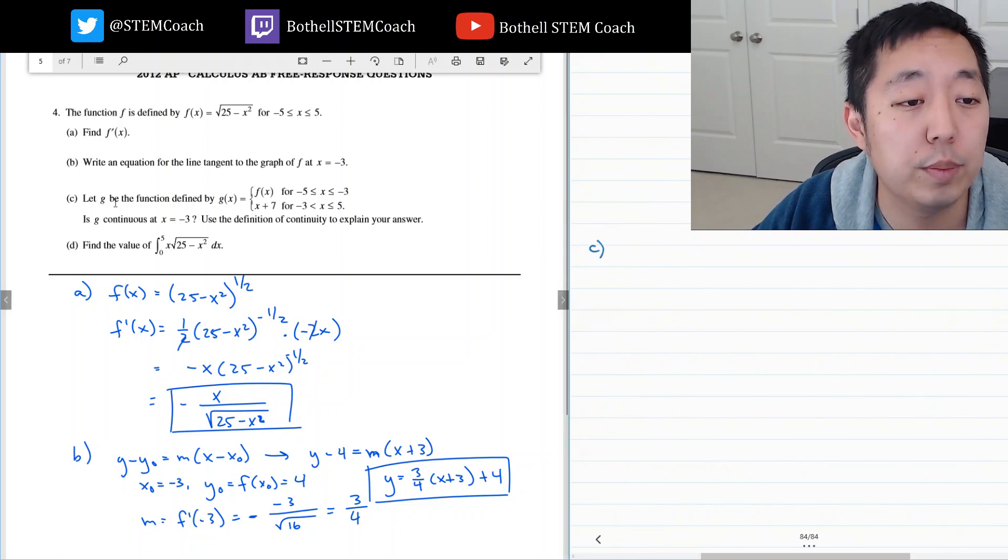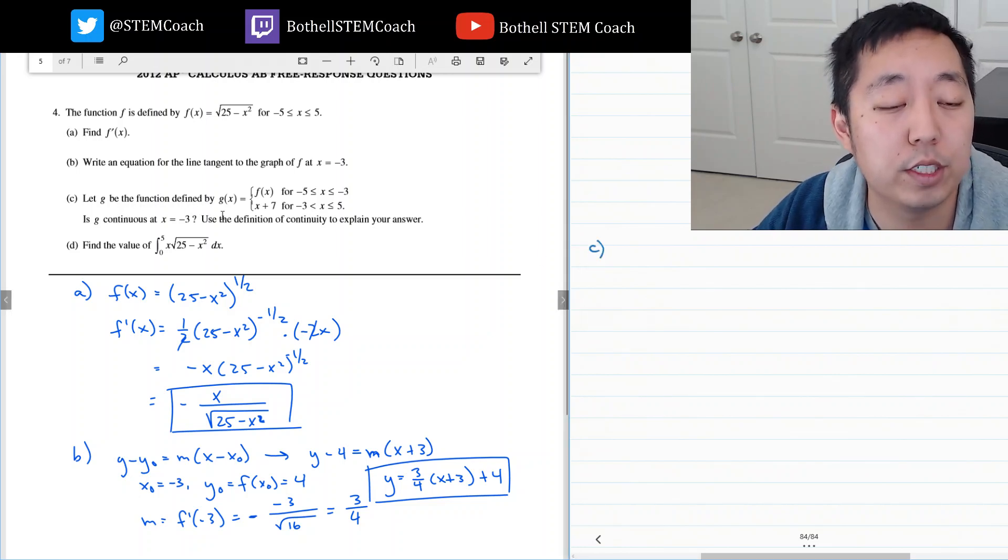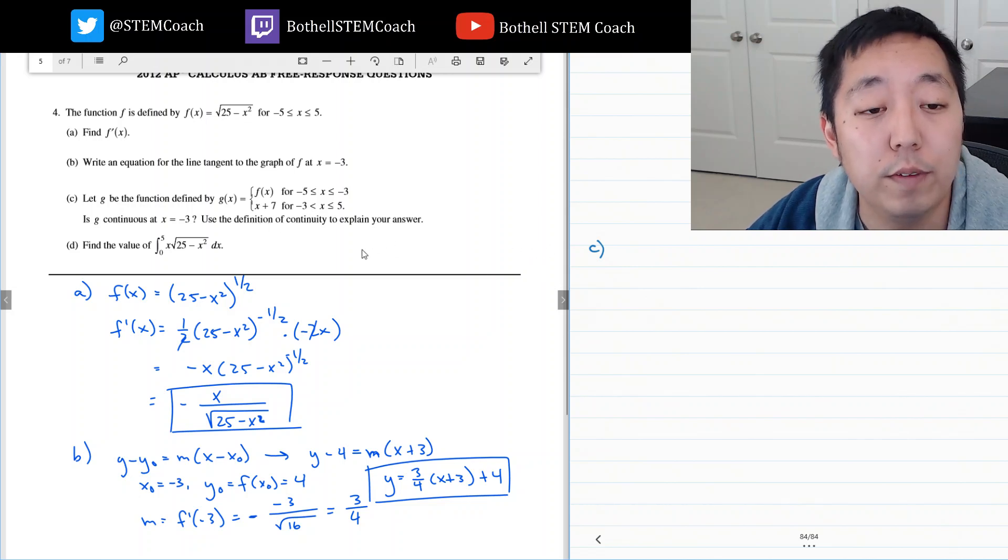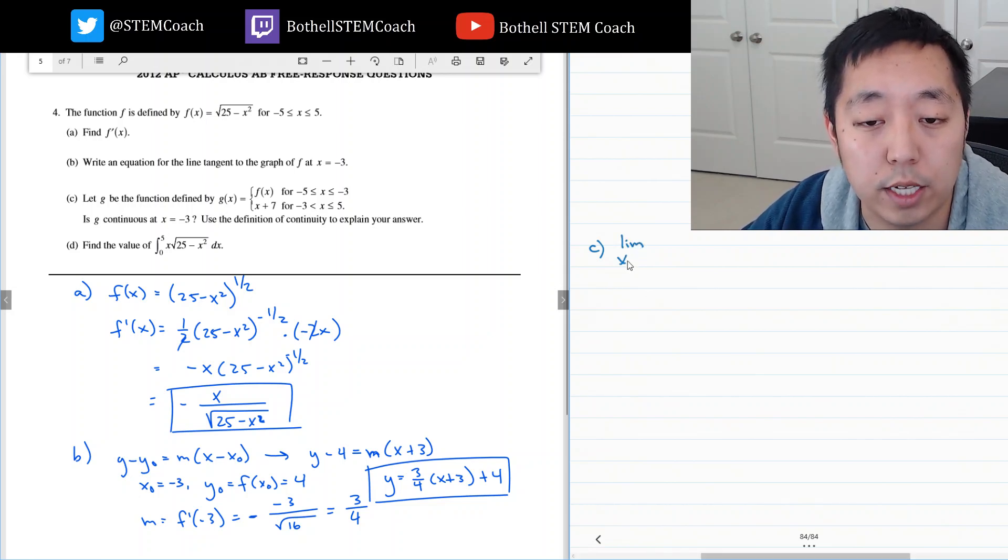C, let g be the function defined by this. Is g continuous at x equals negative 3? Use the definition of continuity to explain your answer. Well, definition of continuity means that the limit as x approaches negative 3 of g, this is what I want to show. The limit as x approaches negative 3 of g of x is equal to g of negative 3.